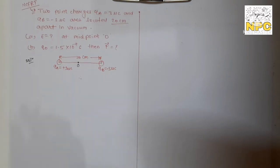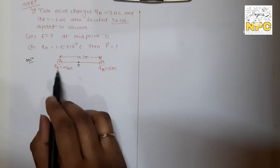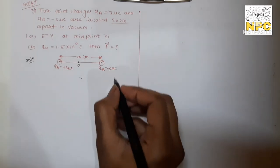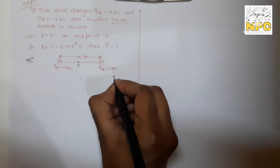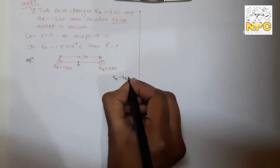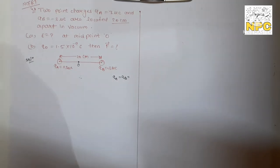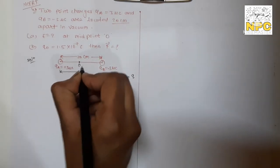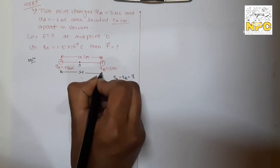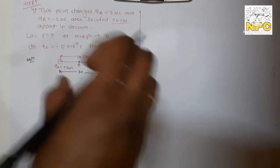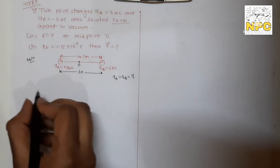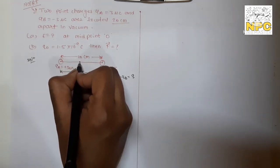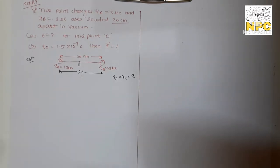For the second part of this question, a test charge Q₀ = 1.5×10⁻⁹ C is given, and you need to find the force on it. Using the relation E = F/Q₀, we get F = E × Q₀ = 5.4×10⁶ × 1.5×10⁻⁹ = 8.1×10⁻³ N, approximately 0.1×10⁻³ N. The unit of force is Newton.